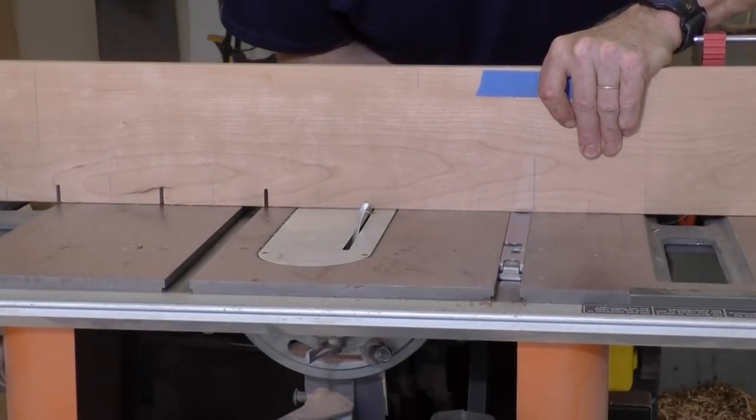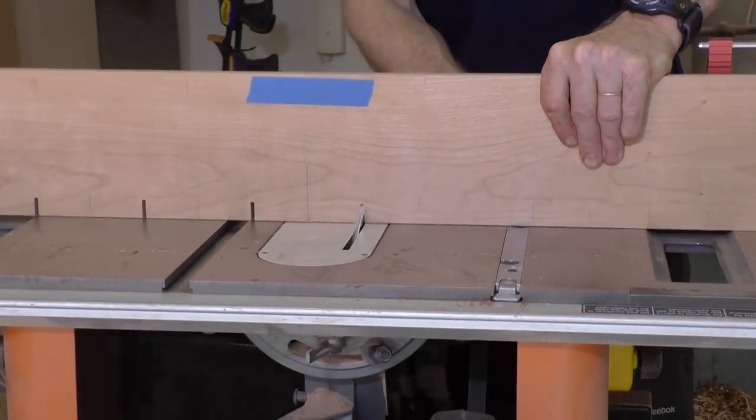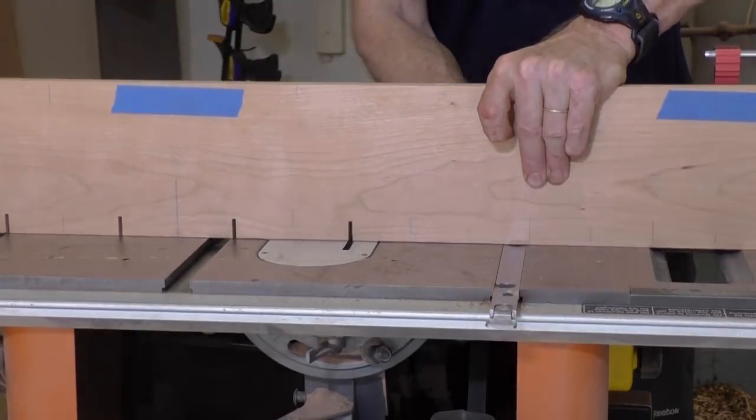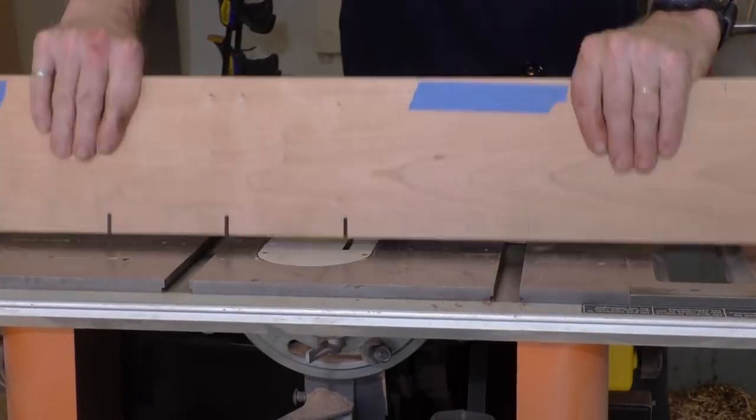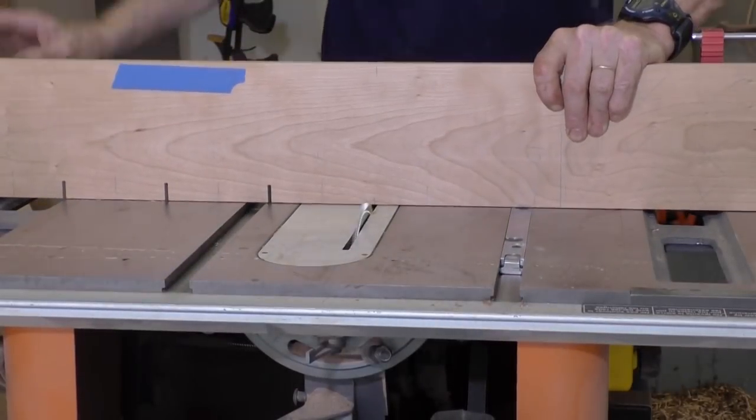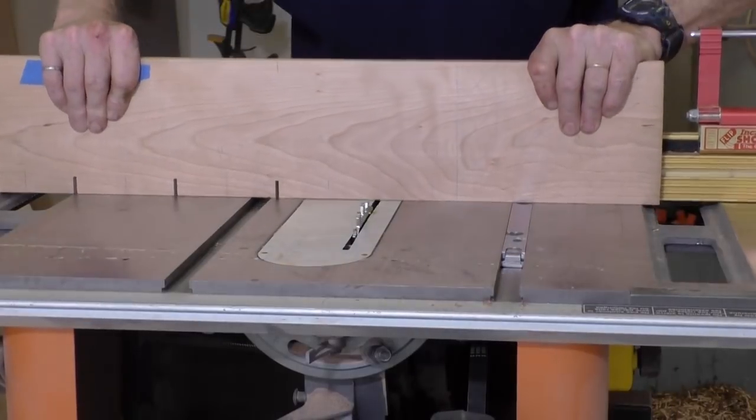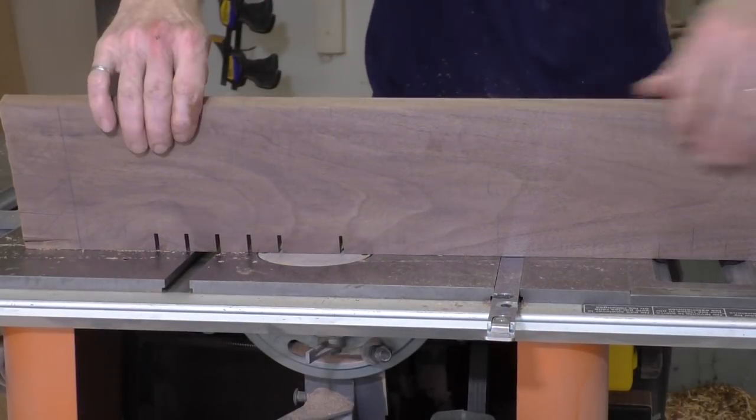And then for the next set of increments, so for every 10 centimeters or for every half of a foot, every six inches, I'm cutting those to be an inch and a quarter inches high. And then for the major increment which correspond to the feet or 100 centimeters or one meter, those are being cut to be two inches high.